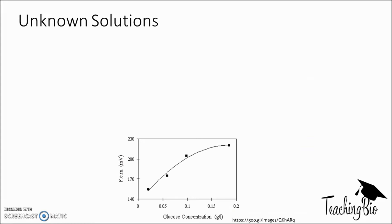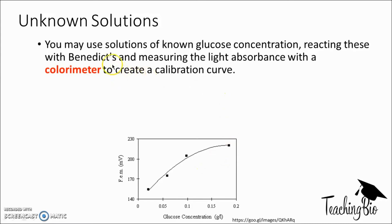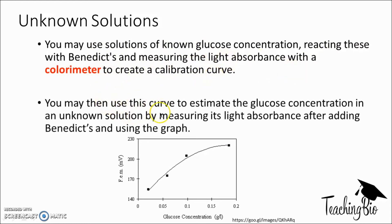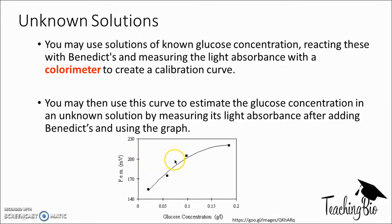In the exam and as one of the required practicals, you need to understand how to do a calibration curve using serial dilution. You use solutions of known glucose concentration, react these with Benedict's, and measure the light absorbance of the colour to create a calibration curve. You then use this curve to estimate the glucose concentration in an unknown solution by measuring its light absorbance after adding Benedict's, plotting glucose concentration against light absorbance using a colorimeter, and reading off the graph.